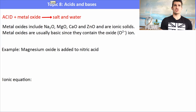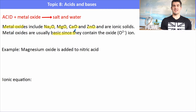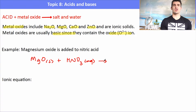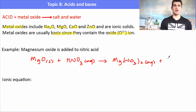The second acid reaction is acid plus a metal oxide, which forms a salt and water. Metal oxides include sodium oxide, magnesium oxide, calcium oxide, and zinc oxide. These compounds are described as alkaline or basic because they contain the oxide ion, which accepts a proton. For example, magnesium oxide added to nitric acid HNO₃ forms magnesium nitrate — make sure to get the formula of that salt correct — and water.